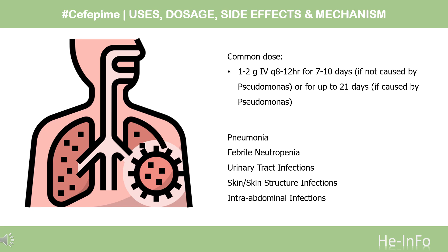Urinary tract infections: Treatment of uncomplicated and complicated UTIs including pyelonephritis, 0.5–1g IV or IM Q12 hours for 7–10 days. Severe UTIs due to Escherichia coli or Klebsiella pneumoniae, 2g IV Q12 hours for 10 days. Skin and skin structure infections: Treatment of complicated skin and skin structure infections, 2g IV Q12 hours for 10 days.